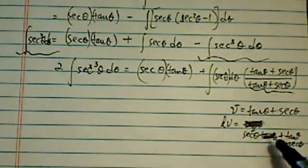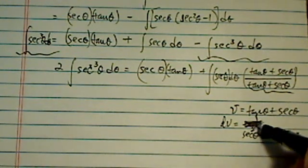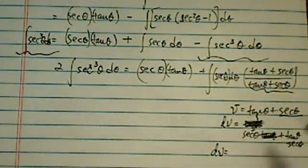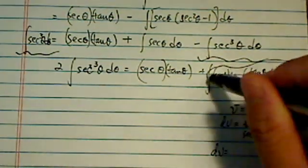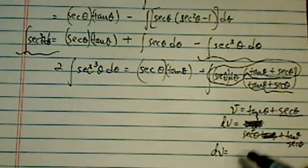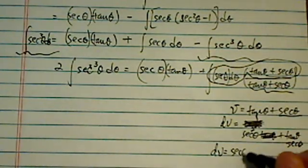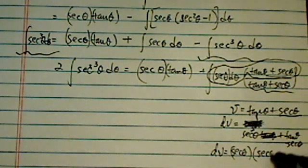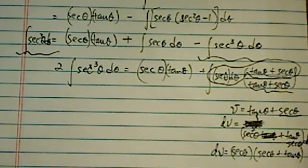Sorry for this mess over here. So tangent theta d theta is secant squared. Secant is tangent theta. So dv is exactly what I have on top here. I don't know who figured that out. So secant theta, pull it out. I have secant theta plus tangent theta, the whole thing, d theta.